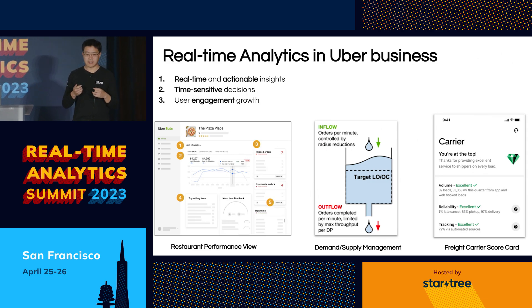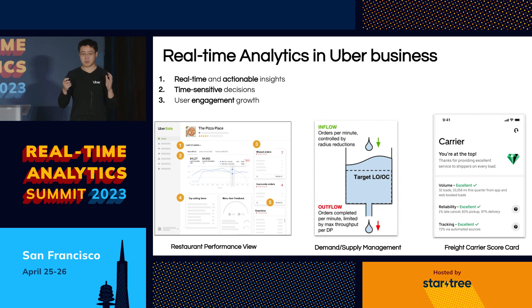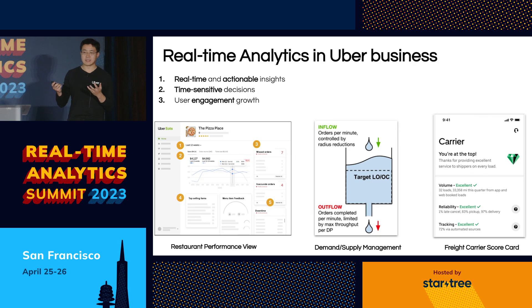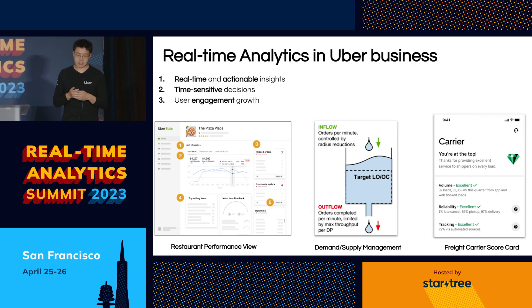If you look at some of these parts in this diagram, for example ongoing missing orders or any actionable orders that demand some immediate action to the restaurant owners — this is the power of real-time actionable insights so that our end customers can take actions. We try to provide real-time insights not only to employees or ops within the company, but to Uber end customers.